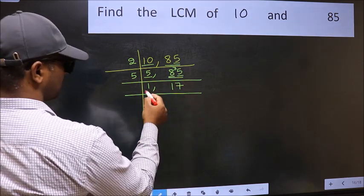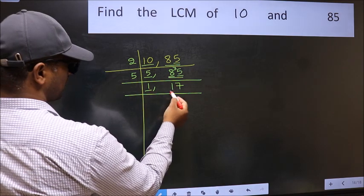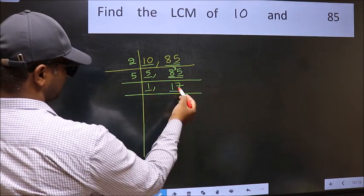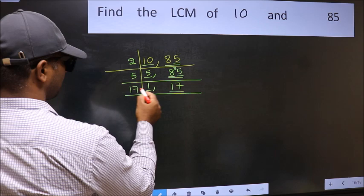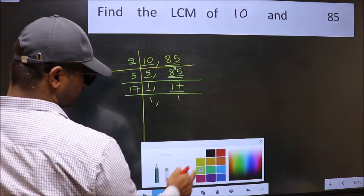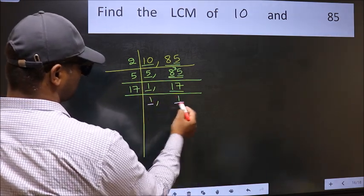Now we got 1 here. So focus on the next number, 17. 17 is a prime number. So 17 once 17. So we got 1 in both places.